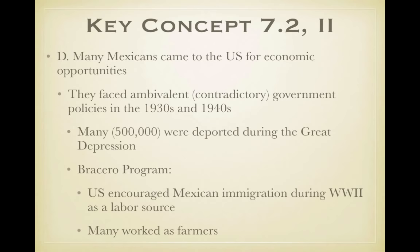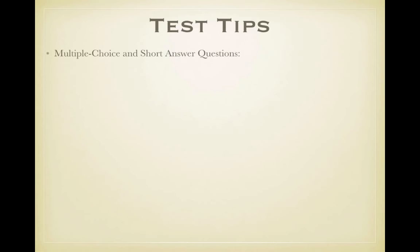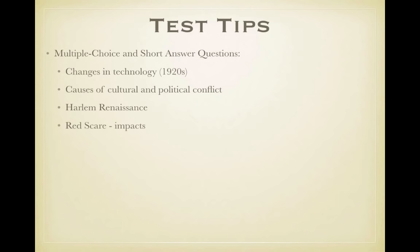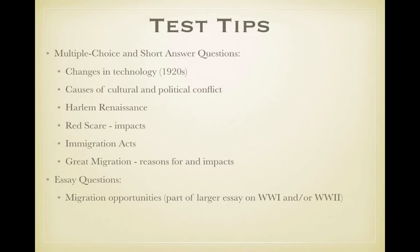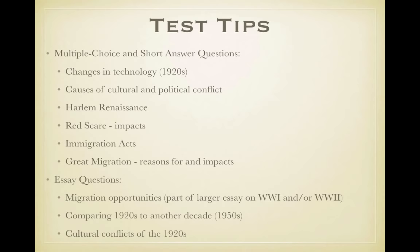Test tips for multiple choice and short answer: know changes in technology in the 1920s like radio and cinema; causes of cultural and political conflict; the Harlem Renaissance; the Red Scare and its causes and impacts; the immigration acts, which restricted southern and eastern Europeans and flatly barred Asian immigrants; and the Great Migration — a strong short answer question on its causes and impacts. For essays, consider migration and opportunities across World War One and Two, comparing the 1920s to the 1950s, and cultural conflicts of the 1920s.